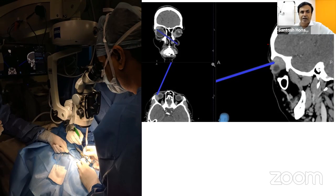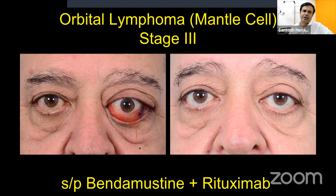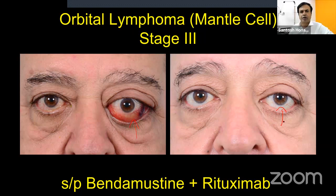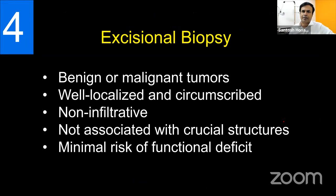The advantage of doing a biopsy: a patient who looks very bad initially may have just mantle cell lymphoma, and without any surgical stigma he can be completely cured with a simple protocol of bendamustine and rituximab. If you know the diagnosis, many patients are amenable to chemotherapy, radiation, a combination of both, or targeted therapy — surgical intervention is actually overkill in those cases.